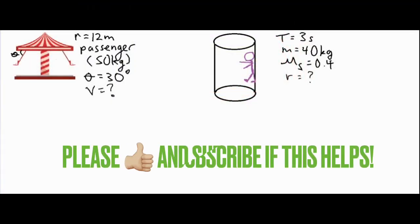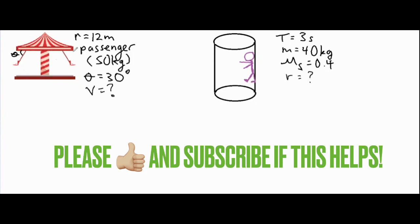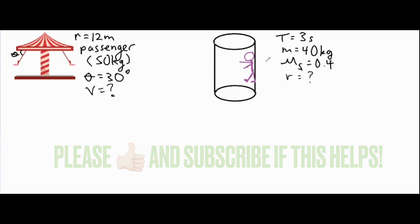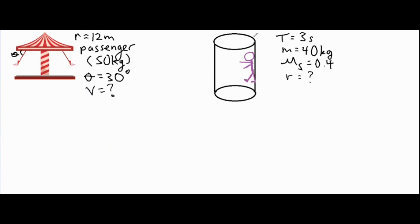In this video we're going to be working out two circular motion problems — one with a carousel swing and then one with a rotor ride. In the first one, we have a radius of 12 meters, a passenger of 50 kilograms, the swing is leaned out at an angle of 30 degrees, and we're going to solve for the velocity it's traveling around. First, you want to analyze the forces acting on it.